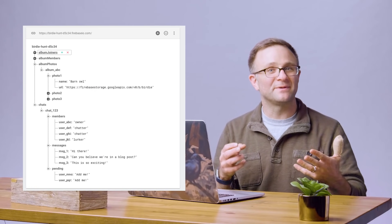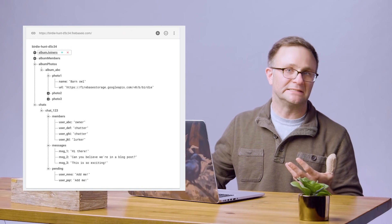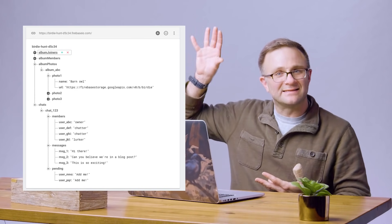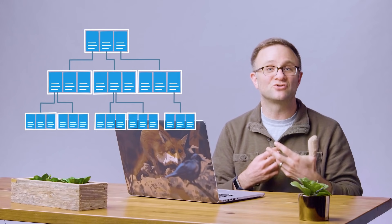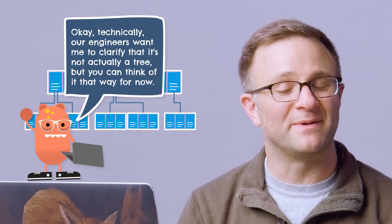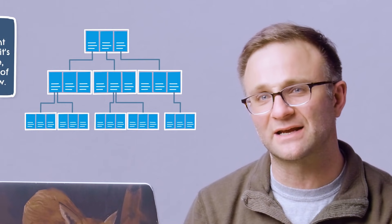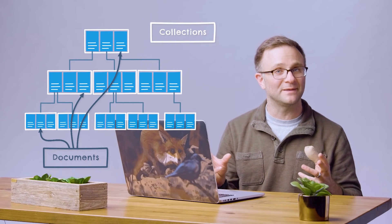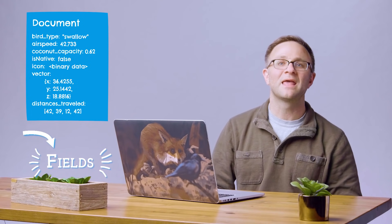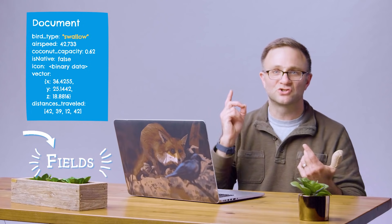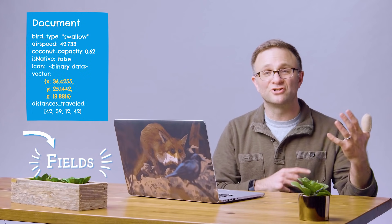So let's talk more specifically about Cloud Firestore's document-collection model. In the Realtime Database world, we typically describe the data stored in Firebase as a big JSON tree — because that's basically what it is. It's a tree with keys and values, where those values can sometimes be objects that contain other keys and values. Cloud Firestore, like the Realtime Database, is a collection of objects stored in a tree-like hierarchical structure. But while the Realtime Database stores everything as a big JSON object, Cloud Firestore is more organized in that it's made up of documents and collections.